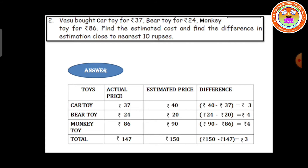We have rounded to the nearest 10 rupees. For the difference, we subtract the larger value from the smaller: 40 rupees minus 37 rupees gives 3 rupees difference. Then, second one — bear toy: actual price is 24 rupees. 4 is less than 5, so we keep the digit as it is: 24 becomes 20. The difference is 24 rupees minus 20 rupees, equal to 4 rupees.